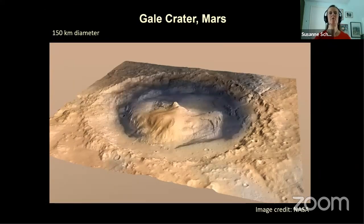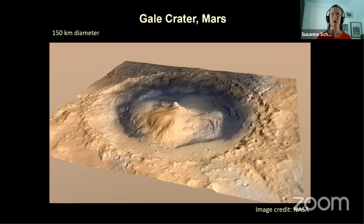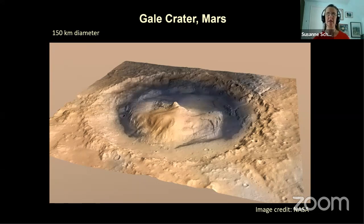This is how Gale Crater looks. You can see the rim and the terraces, but you also see a central mound. This central mound isn't necessarily a central uplift — when you look at it, it looks like layered sediments, which isn't how central uplifts normally look. The crater is 150 kilometers in diameter, so it should have a central uplift, but maybe it's buried or eroded away and the crater was filled by something else. We don't know yet. We are slowly trying to piece that together, but we haven't reached the mound yet, and so far all we've found is sediments.